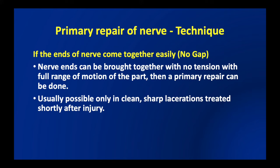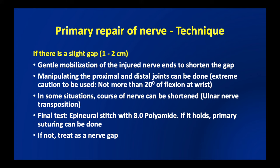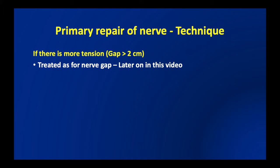If the nerve ends can be brought together with no tension even with full range of motion, a primary repair can be done — usually only possible in clean sharp lacerations treated shortly after injury. If there is a slight gap of less than two centimeters, gentle mobilization of the nerve ends proximally and distally can be done, with no more than 20 degrees of flexion at the wrist permissible. The course of the nerve can also be shortened — for example, by ulnar nerve transposition. The final test is applying an epineural stitch with 8-0 polyamide; if it holds, primary suturing can be done. If not, it must be treated as a nerve gap.